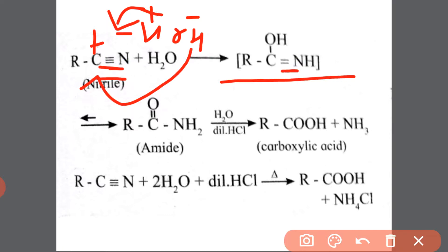This happens because carbon forms a new bond with OH⁻ and nitrogen also forms a new bond with hydrogen. If you rearrange this second structure, you can get the third structure. This third structure is the amide functional group.